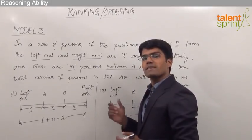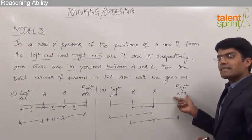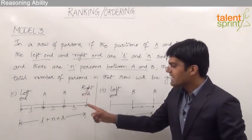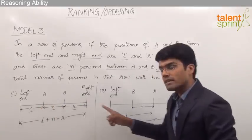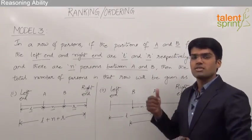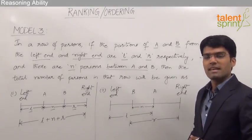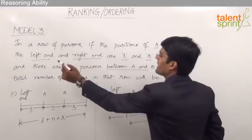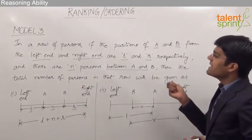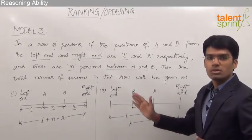There is also a second case possible. In this case, the positions of A and B are interchanged compared to the first case — A was closer to the left end in case 1, but in case 2, A is closer to the right end. The given statement only mentions that the positions of A and B from the left end and right end are L and R respectively, but it does not specify whether A is closer to the left end or right end. That is why we consider both possible cases.